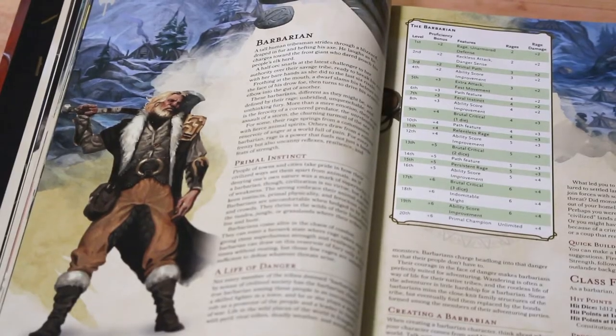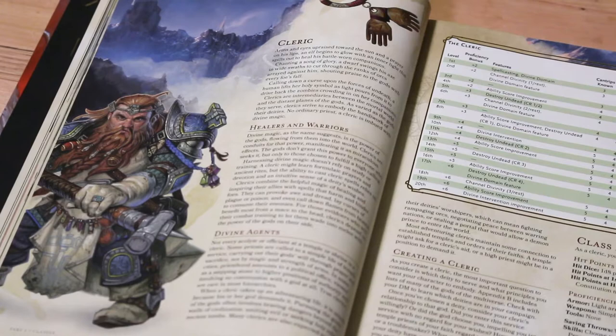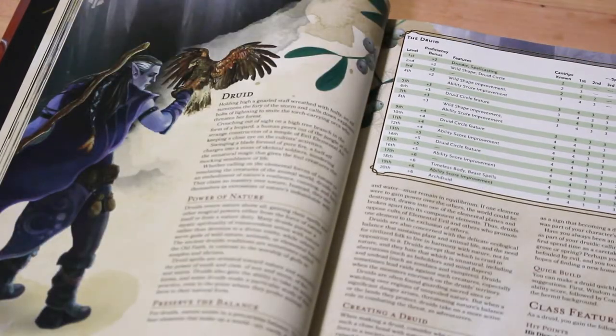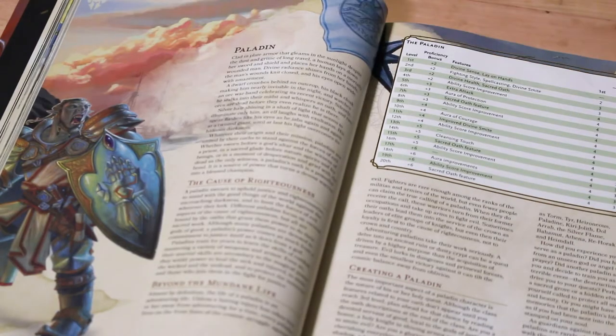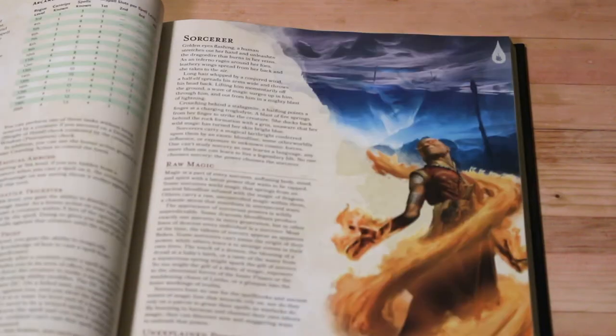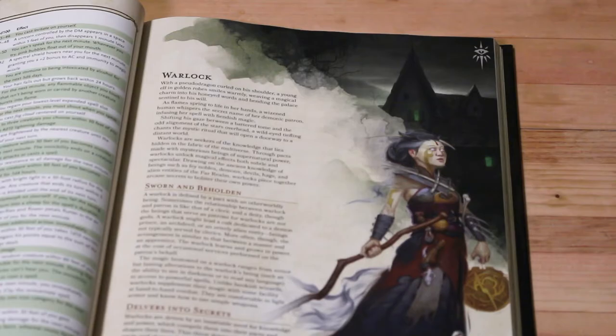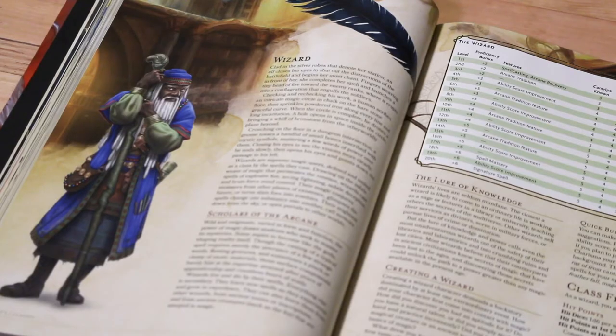Barbarians, Bards, Clerics, Druids, Fighter, Monk, Paladin, Ranger, Sorcerer, Warlock, and Wizard. There are many additional classes that can be played in 5e, but these are the very basic ones.